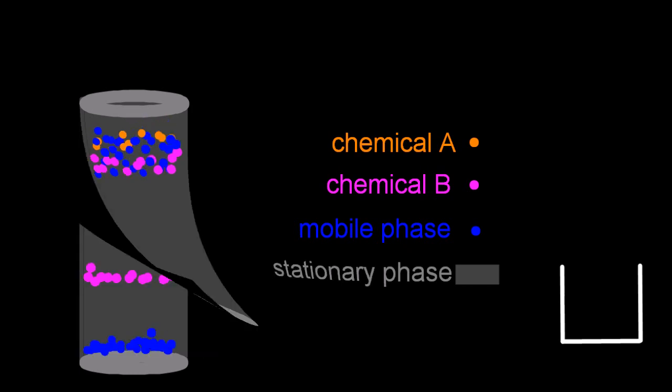And eventually you'll see that the chemicals have been split apart. And if you pour more mobile phase down, they'll split apart even more. This is called partition.